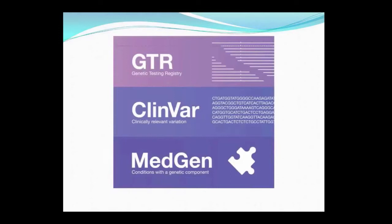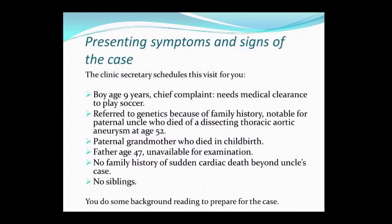The three resources that we're highlighting are MedGen, GTR, and ClinVar. Before we delve into a case study, I'd like to begin with a quick introduction to each resource. MedGen is NCBI's medical genetics portal, and it focuses on information on conditions with a genetic component. The NIH Genetic Testing Registry, or the GTR, is a registry of available genetic tests for heritable and somatic changes in humans, which are voluntarily provided by testing laboratories. And ClinVar is an archival database containing assertions of clinical significance for variants and their relationships to phenotypes.